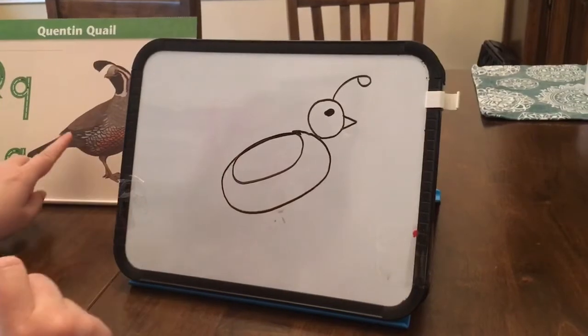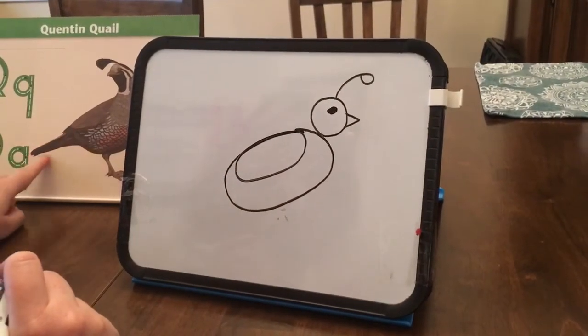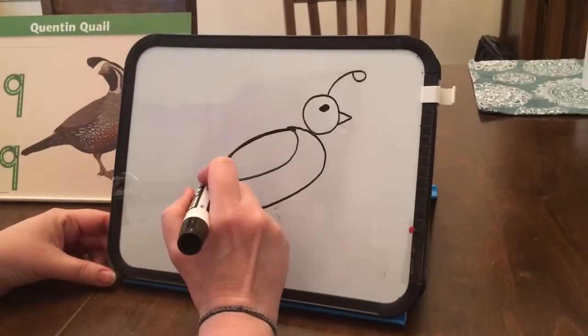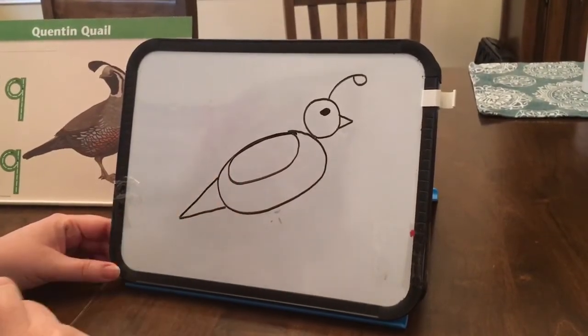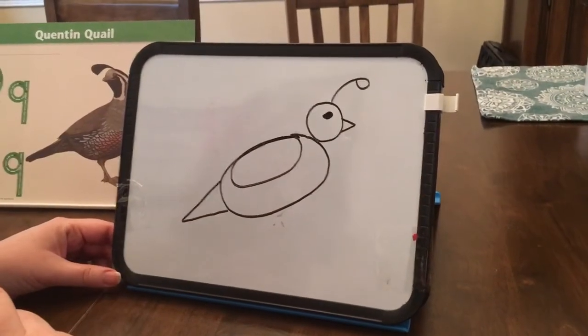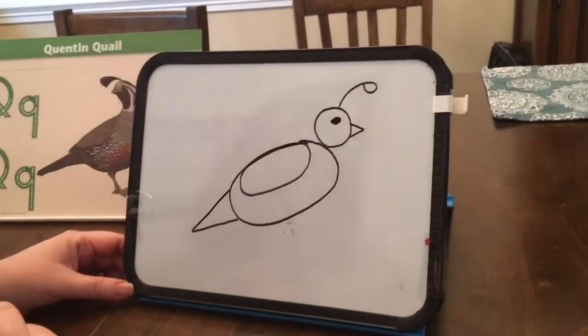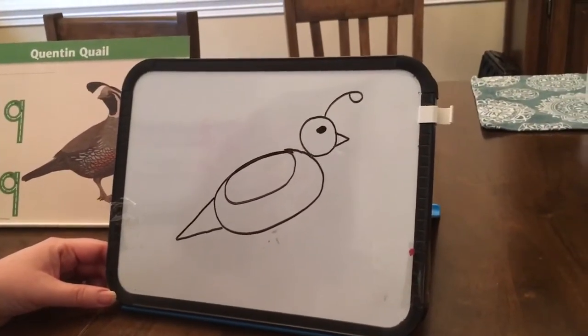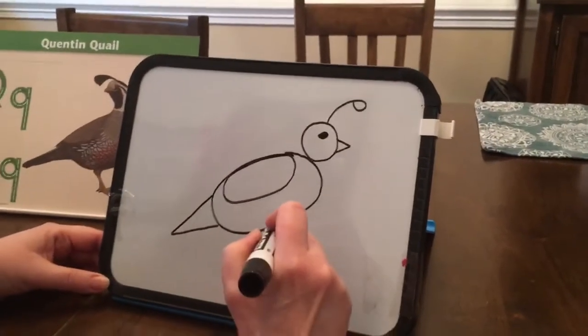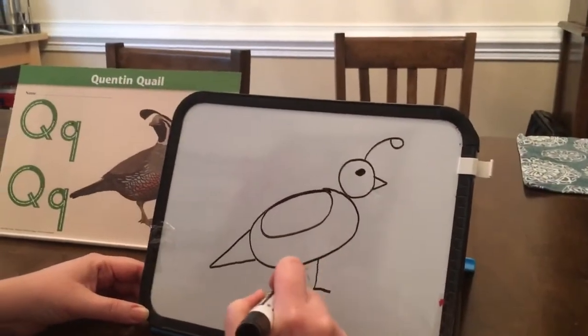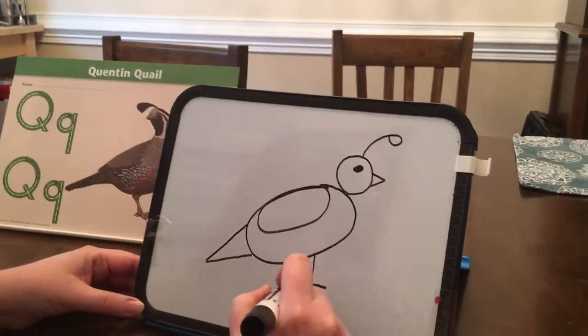Now Quentin Quayle, as you can see, has a long pointy tail. So I'm going to use another triangle to make his tail. And now I already told you that Quentin Quayle spends a lot of time on the ground. So what does he need to walk around on the ground? That's right, he needs some legs and some feet and some toes. Look at that.